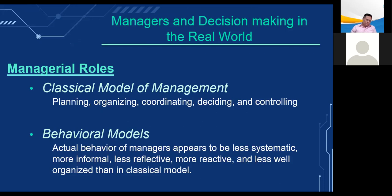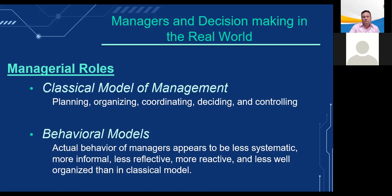Systems to support decision making produce better decisions by managers and employees, above-average returns on investment for the firm, and ultimately higher profitability. However, information systems cannot improve all the different kinds of decisions taking place in an organization. Managerial roles play key roles in organizations — the responsibilities range from making decisions to writing reports, attending meetings, and arranging events. We can better understand managerial functions and roles by examining classical and contemporary models of managerial behavior.